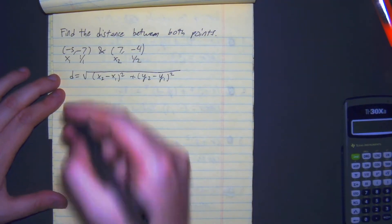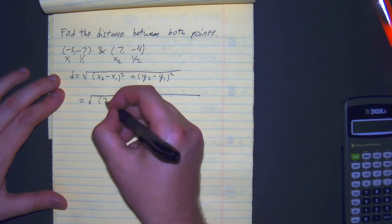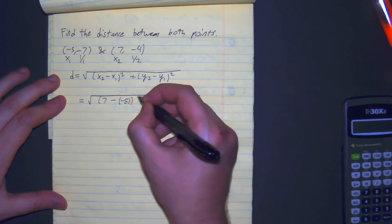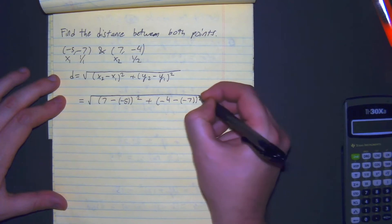And so from here, distance is equal to the square root of 7 minus negative 5 squared plus negative 4 minus negative 7 squared.